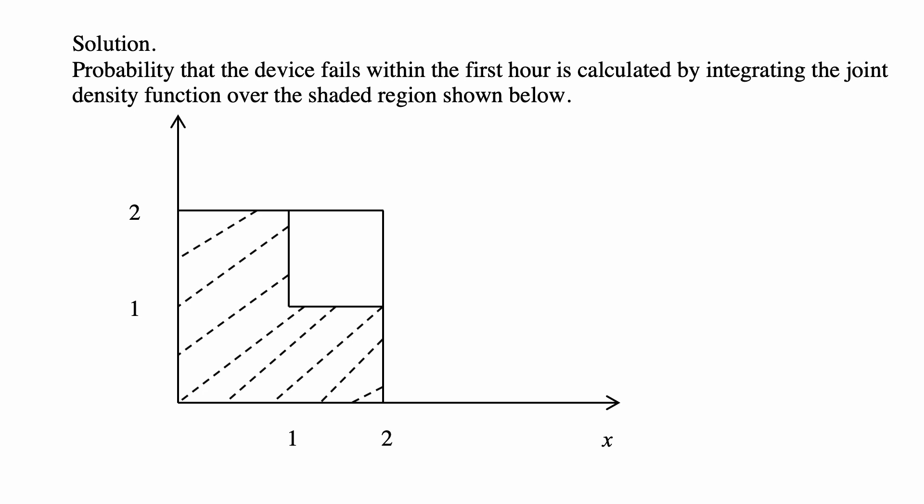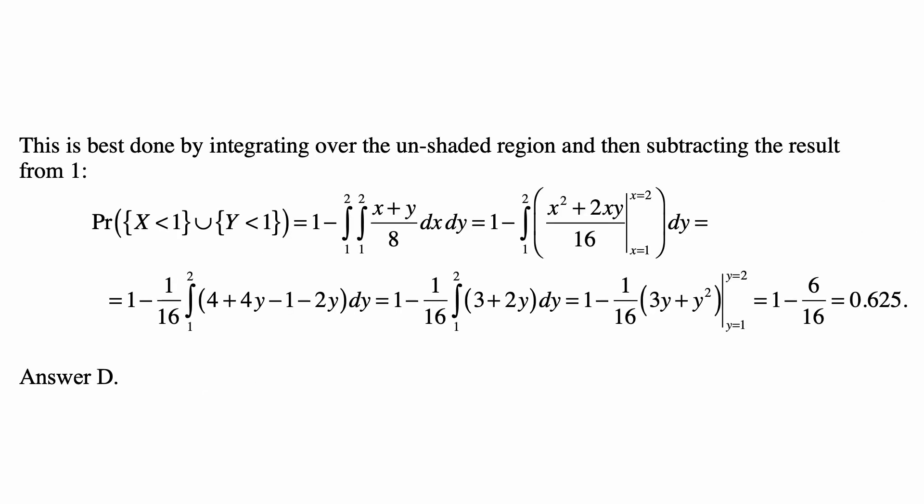So we need to take the integral of that region, the shaded region, of the joint density, and we would have the answer. Well, it's actually much more efficient to take 1 minus the area over that not shaded white area of the joint density.